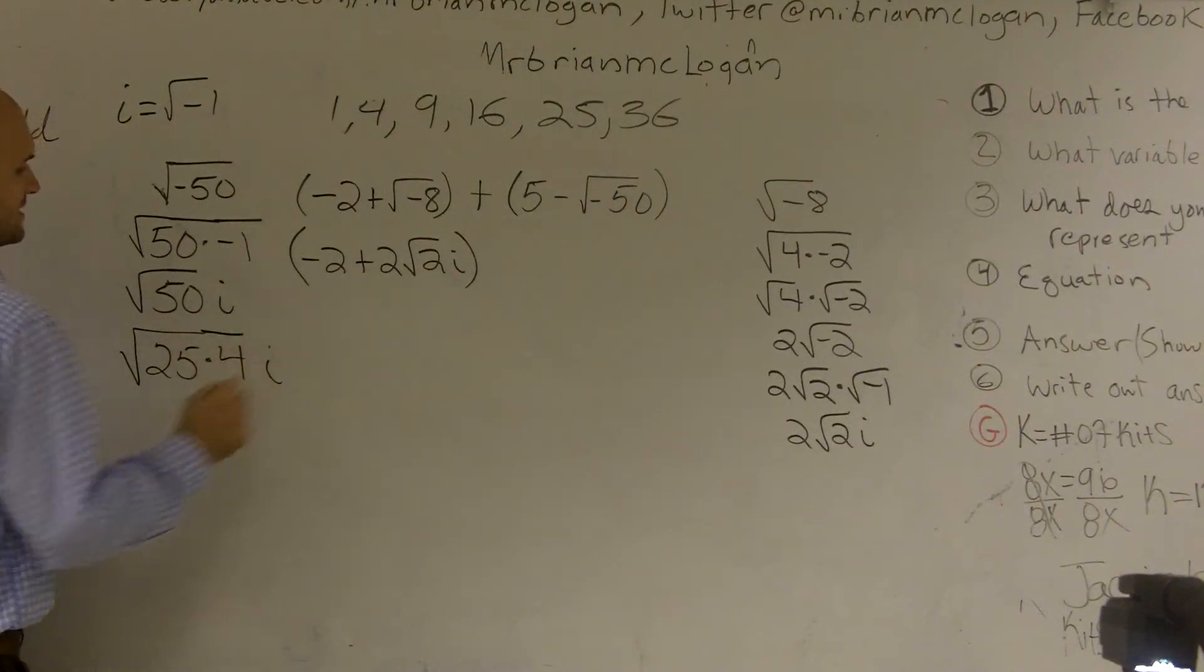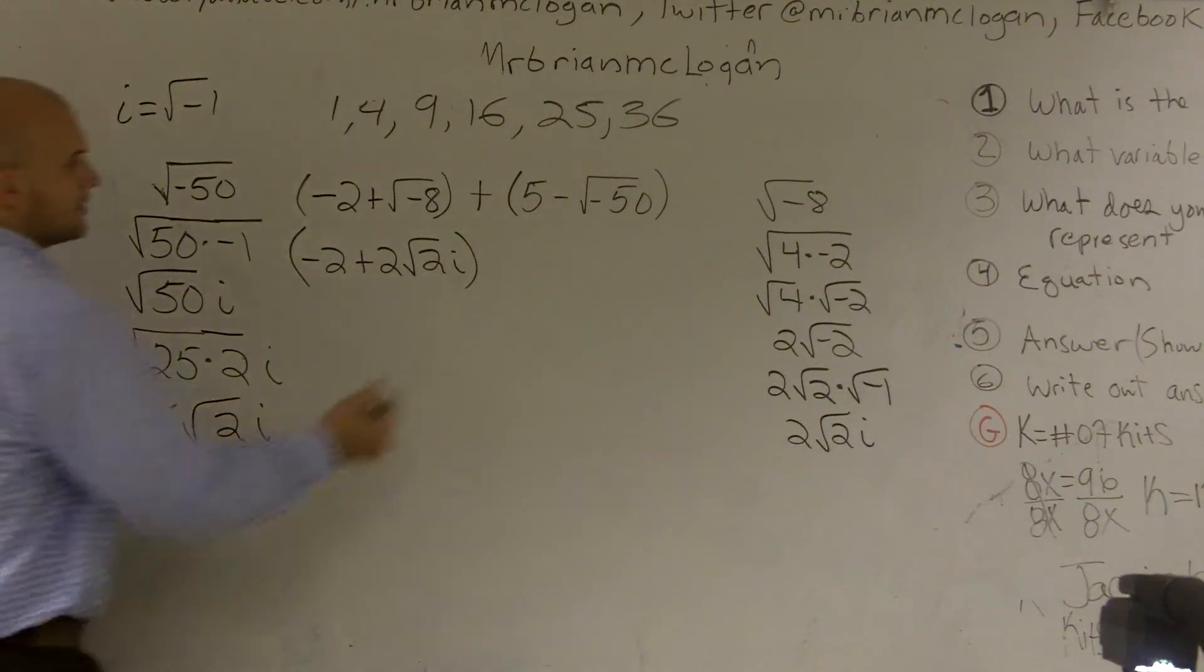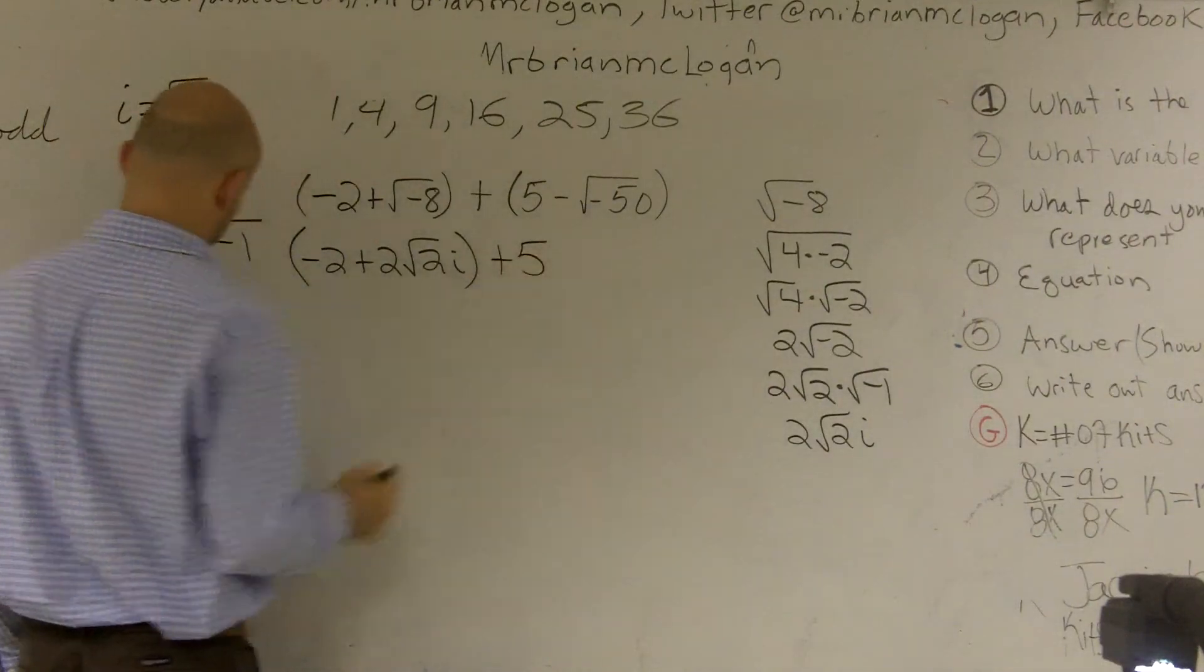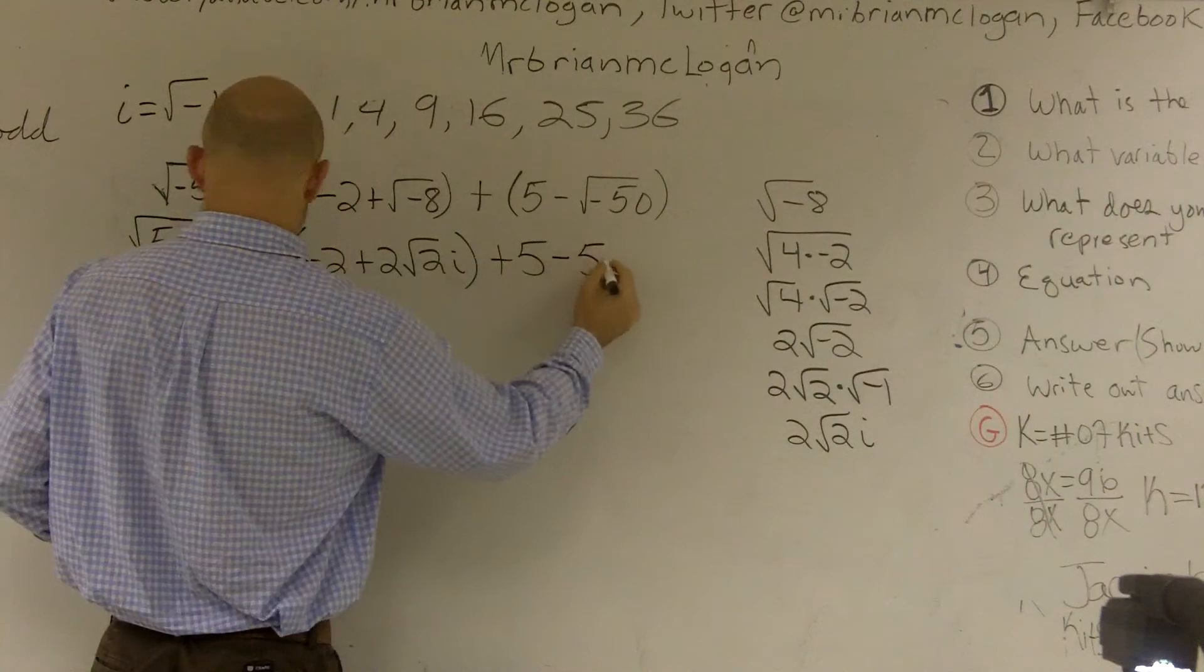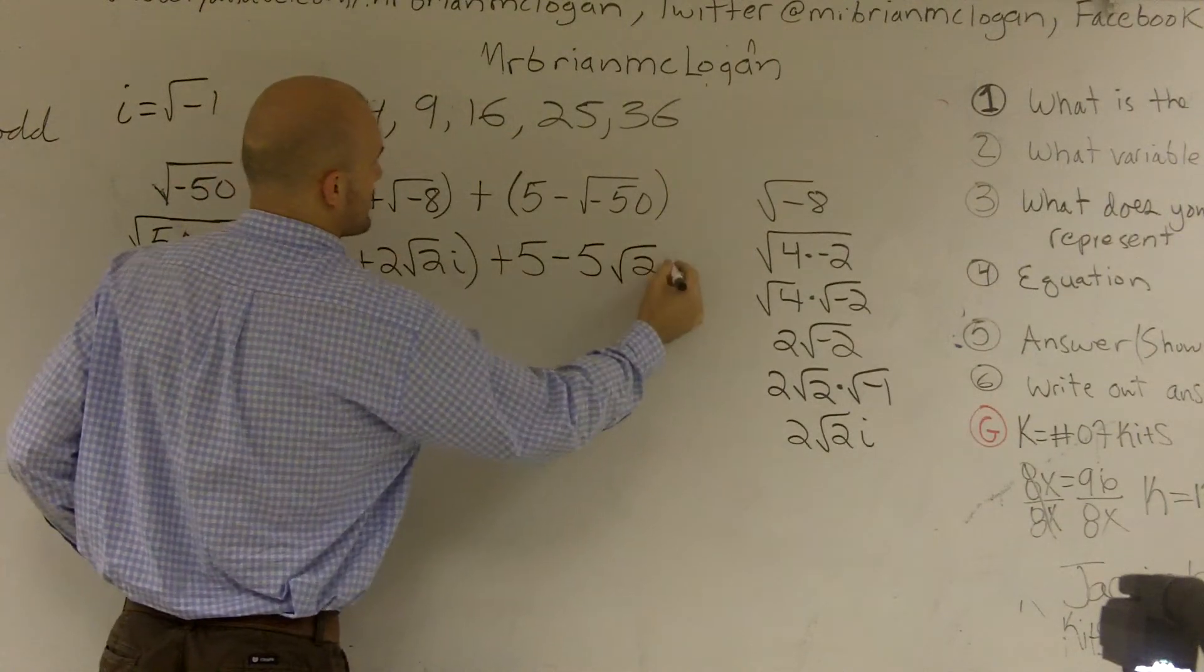Then i at the end. The square root of 25 is 5. I'm sorry, that's 2. The square root of 25 is going to be 5 times square root of 2i. So minus 5 times square root of 2i.